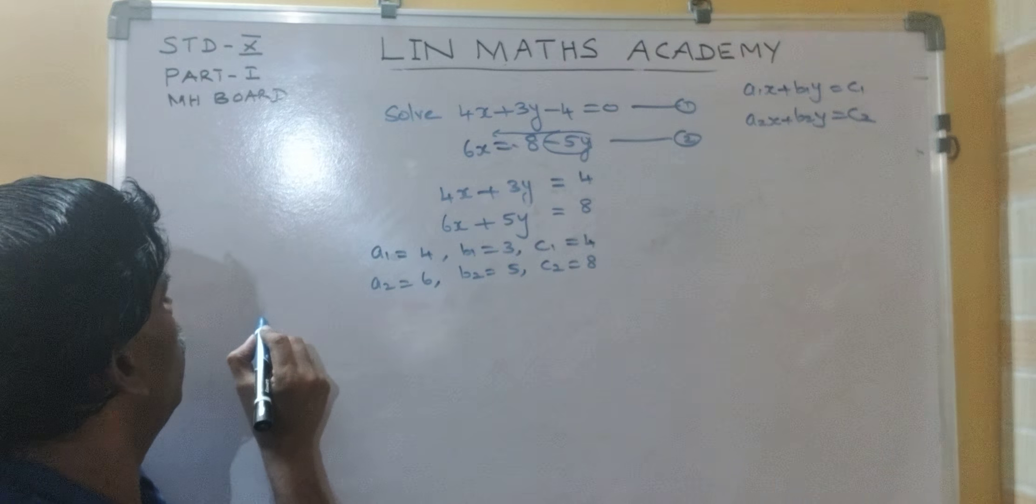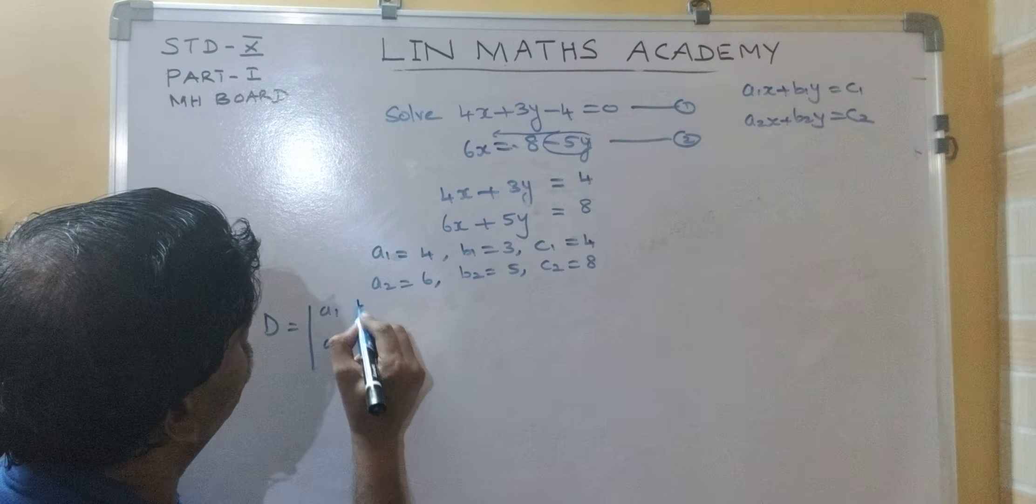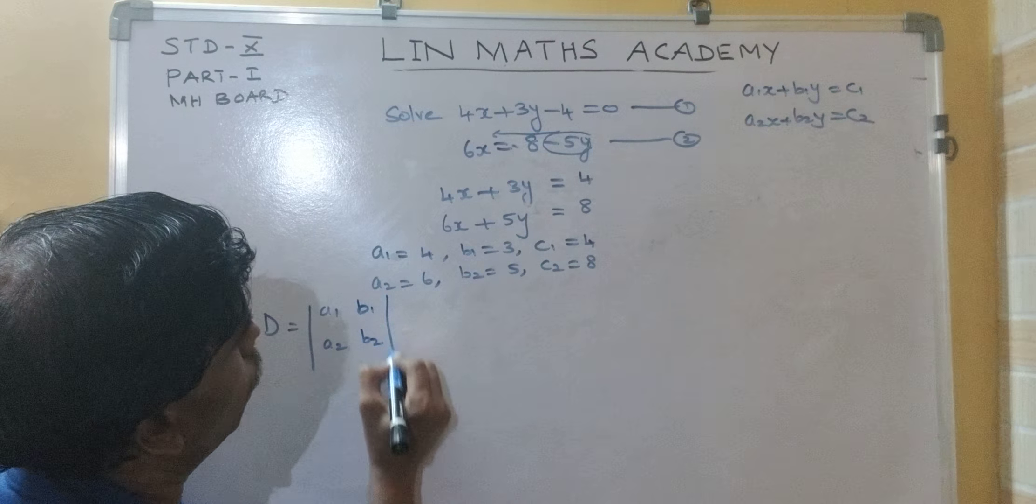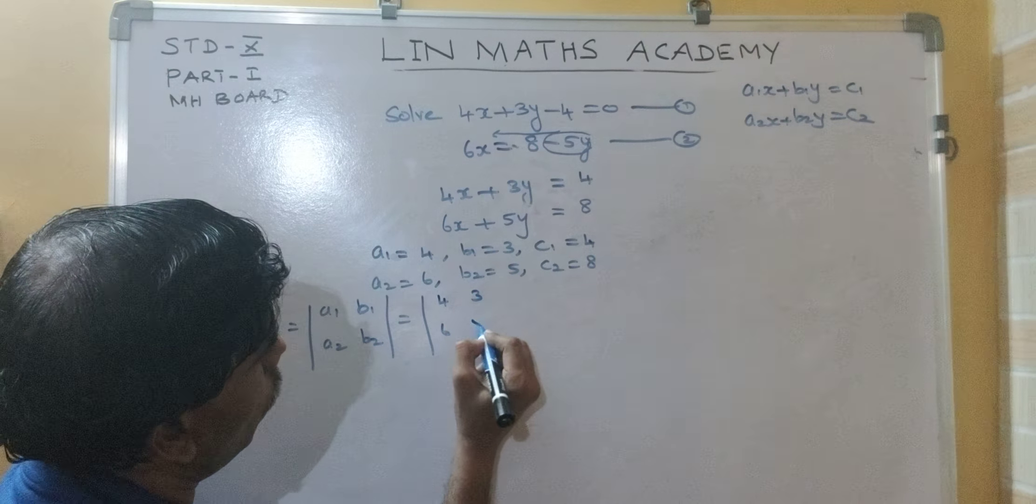So, what is d here? a1, a2, b1, b2. So, 4, 6, 3, 5.